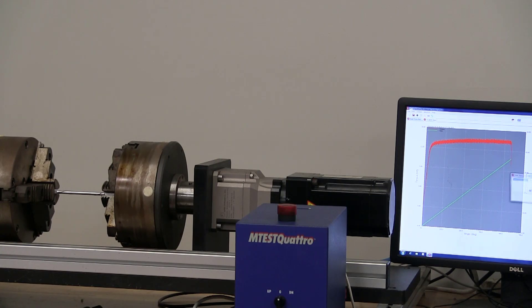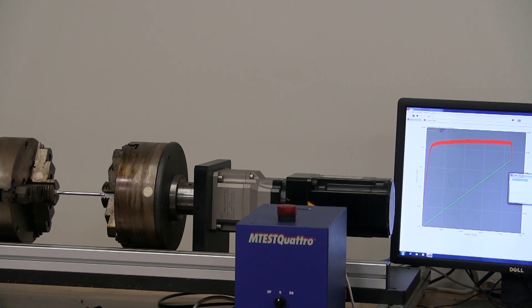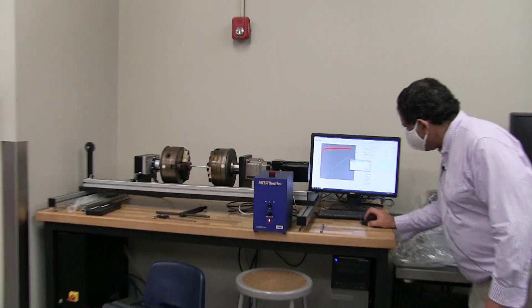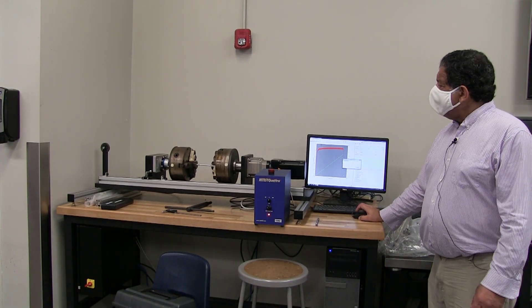We'll know the point at which the specimen has failed by when the torque drops, which is right now. You notice the torque suddenly dropped down. That's where you have torsional fracture. That happened at about, oh, I don't know, 425 degrees or so.